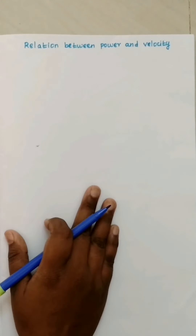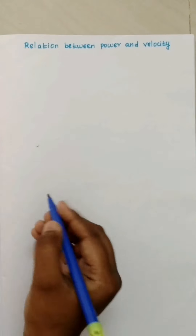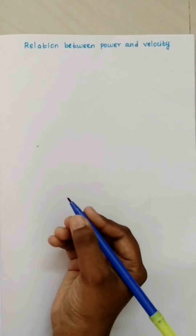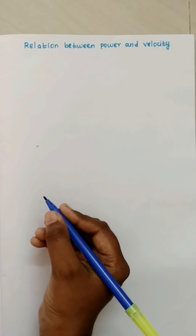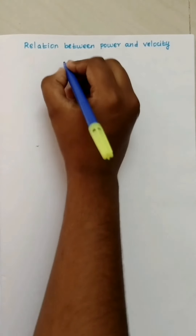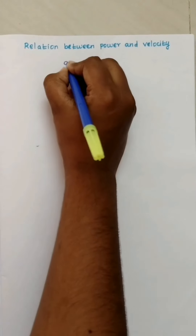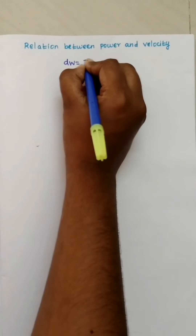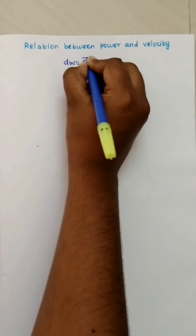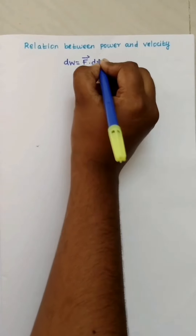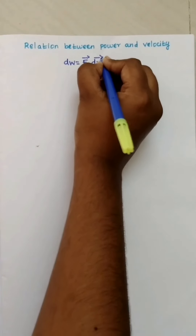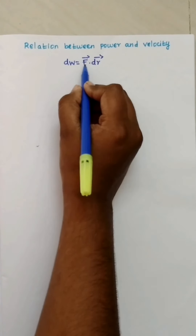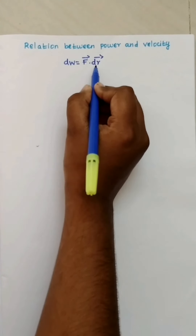So let's take the first equation — the work done equation. Work done is already known to us. Work done formula is force into displacement. So dW is equal to F vector dot dr vector, where dW is work done, F is force, and dr is displacement.